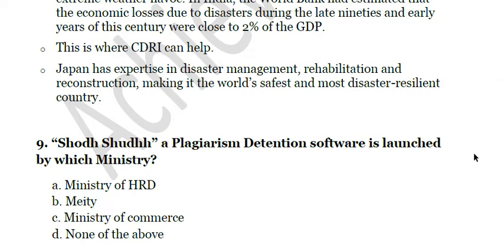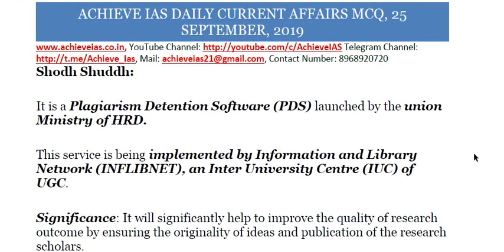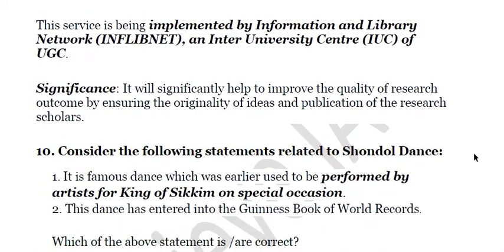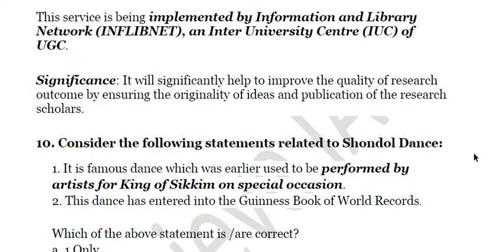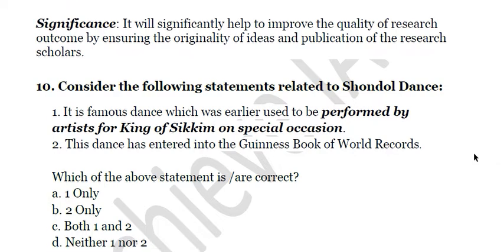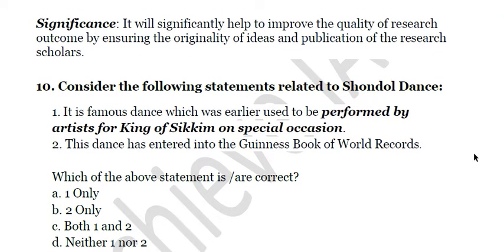Question nine: the SHODHGANGA plagiarism detection software was launched by which ministry — A) Ministry of HRD, B) Ministry of Electronics and Information Technology, C) Ministry of Commerce, D) none of the above? The answer is A — Ministry of HRD. It is implemented by the Information and Library Network, an inter-university center of UGC. Its significance is that it will help improve the quality of research by ensuring the originality of ideas and publications of research scholars.